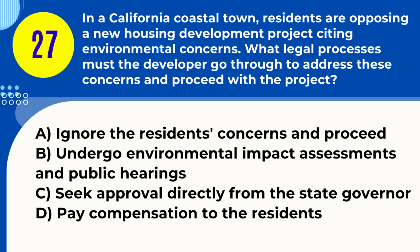Question 27. In a California coastal town, residents are opposing a new housing development project citing environmental concerns. What legal processes must the developer go through to address these concerns and proceed with the project? A. Ignore the residents' concerns and proceed. B. Undergo environmental impact assessments and public hearings. C. Seek approval directly from the state governor. D. Pay compensation to the residents. Answer: B. Undergo environmental impact assessments and public hearings. Explanation: Developers in California must address environmental concerns through processes like environmental impact assessments and possibly public hearings, especially in coastal areas.